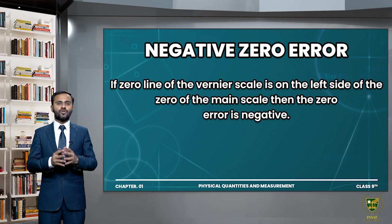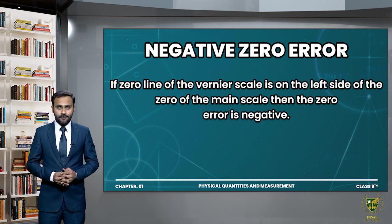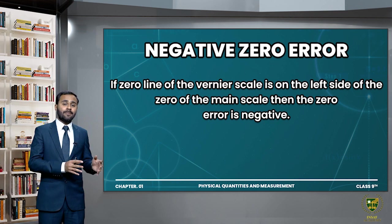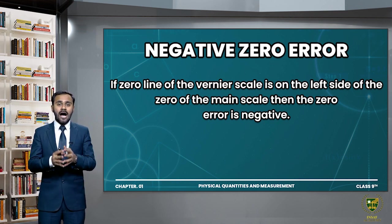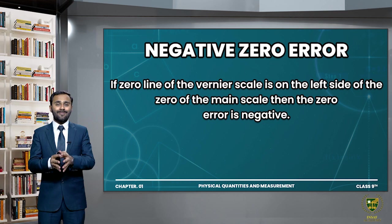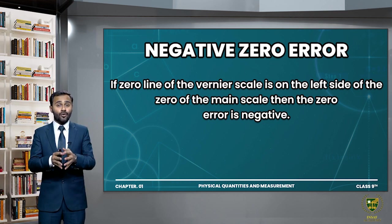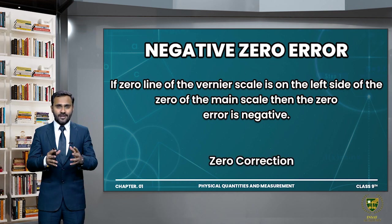If we suppose that our instrument has a zero error, then when we take a measurement with this instrument, we have to remove the error. And that is called zero correction.